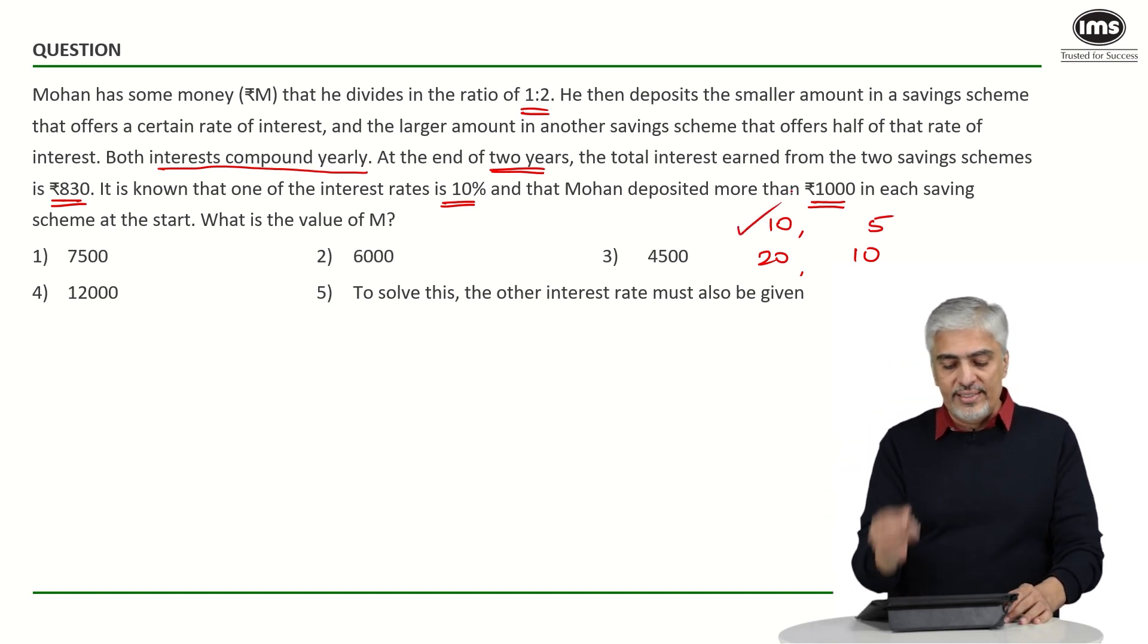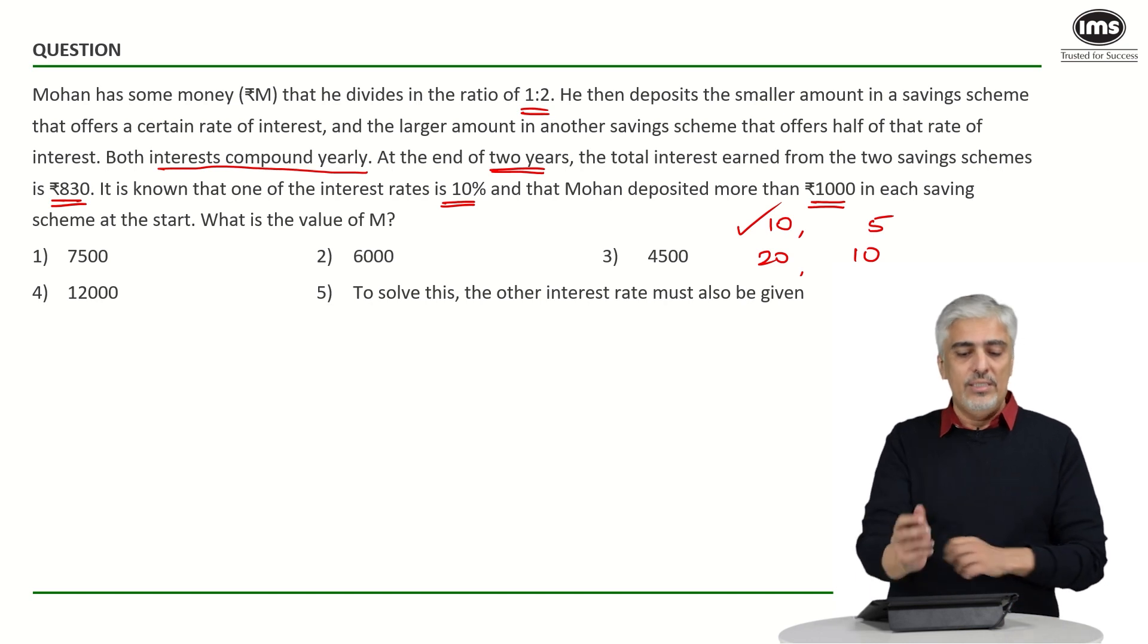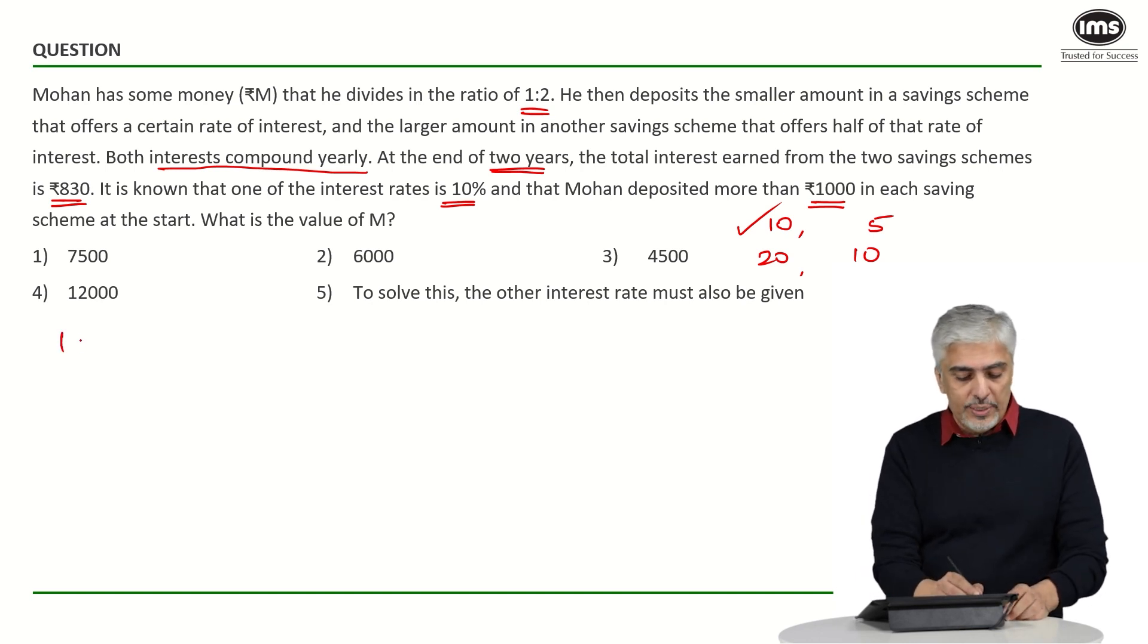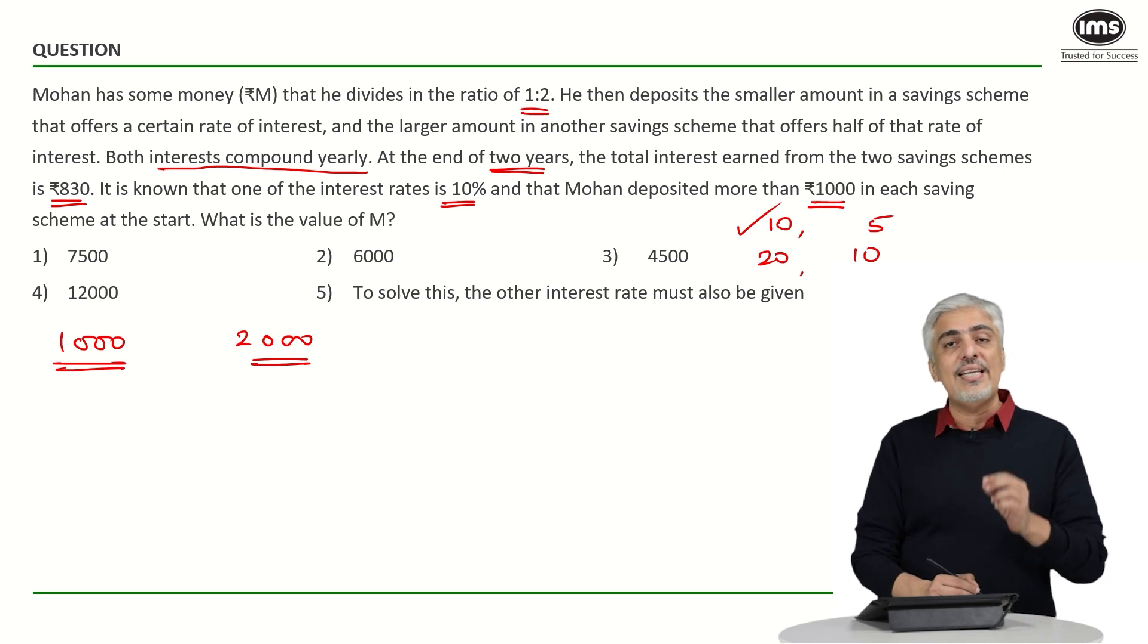Now, let us try first using this way. Rough numbers. What do I get? So, if I take 1000 rupees in the first scheme and 2000 in the second scheme. Compound interest annually. So, if the rate of interest is 10% for 2 years, how much will it become? You can always use successive percentage change for compound interest.